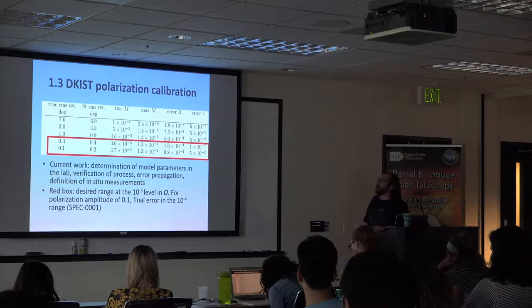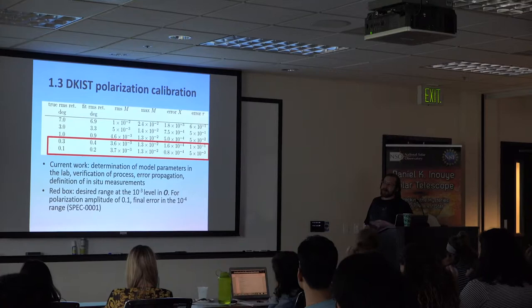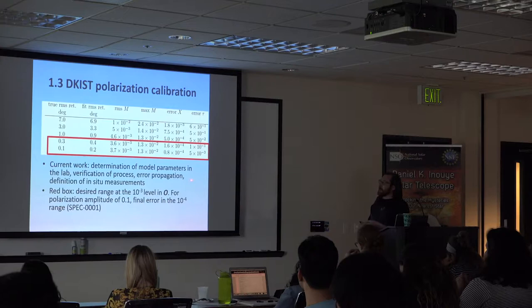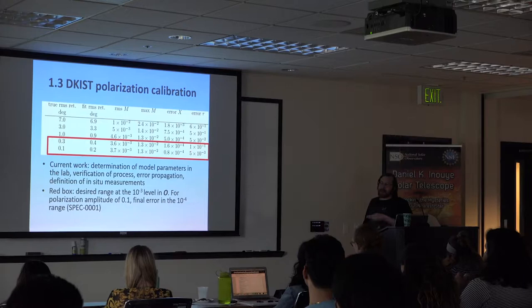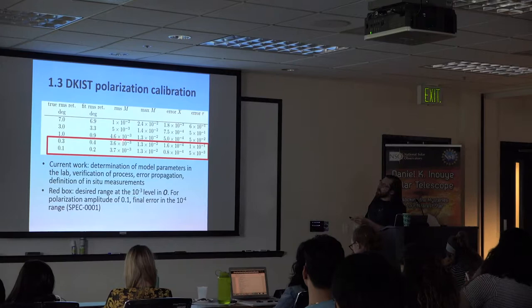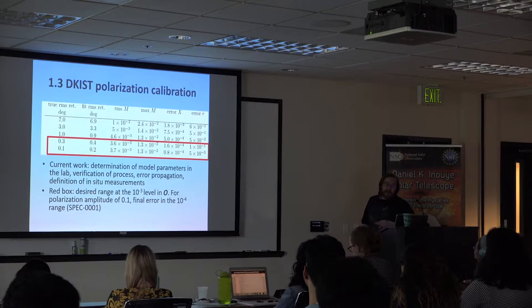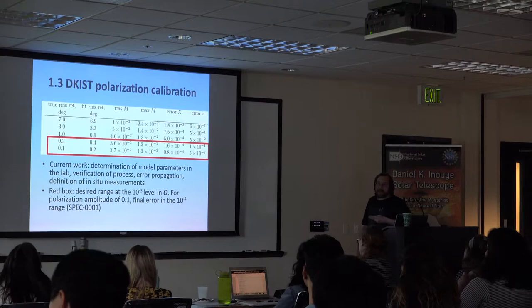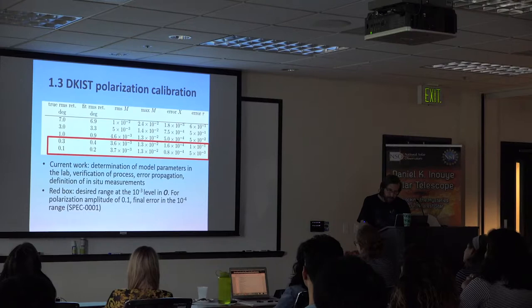As an outlook, the current work is focused on determining how to measure and verify the model parameters, and critically on error propagation: if there is an error in one parameter, how much does it change the finally reduced data? The target is that the RMS error in the modulation matrix stays at the level of 10^-3. If solar polarization signals are typically 10%, then the final error is in the 10^-4 range — and that drives how the calibration is applied.